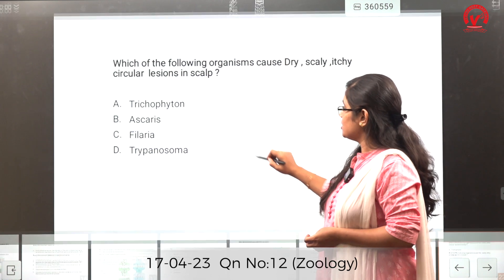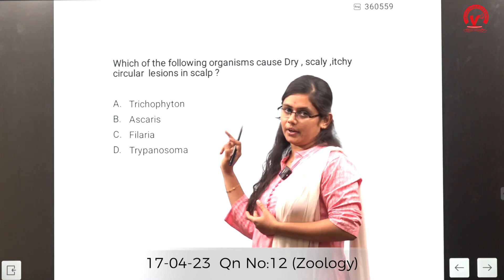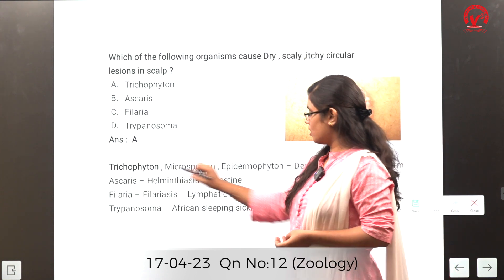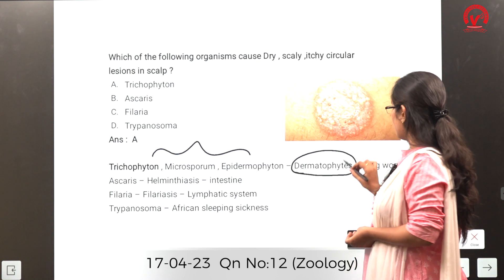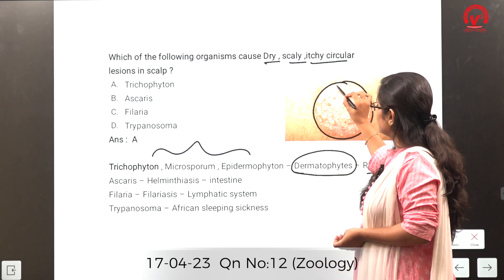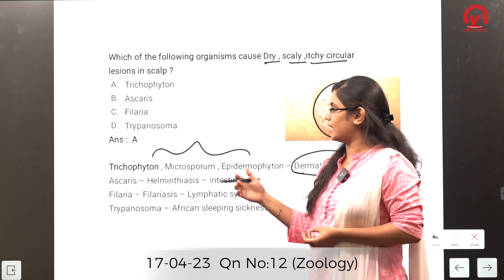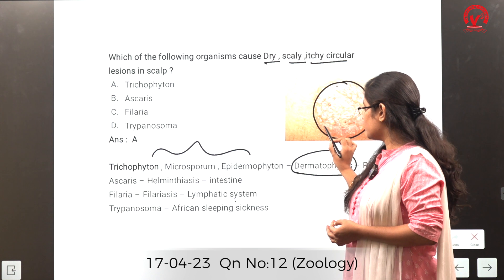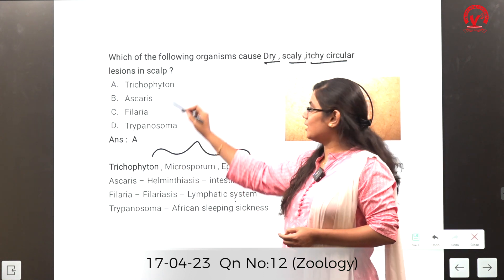Which organism causes dry, scaly, itchy, circular lesions in the scalp? The answer is trichophyton. Trichophyton, microsporum, and epidermophyton all come under dermatophyte fungi and they cause ringworm, which presents with dry, scaly, itchy circular lesions. Ascaris is a helminth causing ascariasis. Filaria is a worm causing filariasis and blocking the lymphatic system. Trypanosoma is a protozoan causing African sleeping sickness. So the answer is trichophyton, option A.